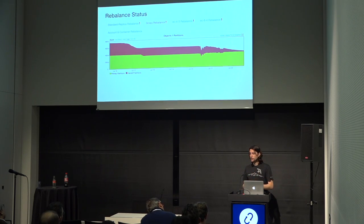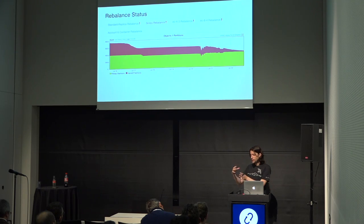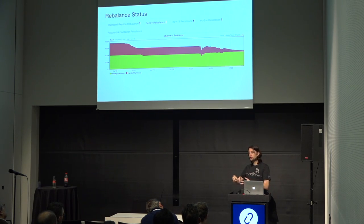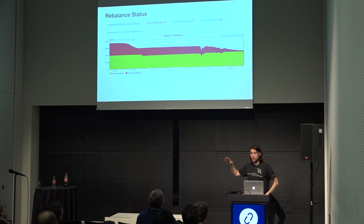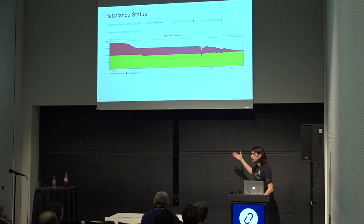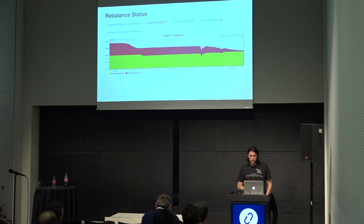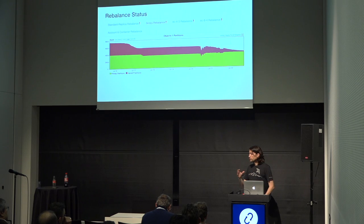When a partition is placed onto a non-primary location, we call that a handoff location. This graph maps a particular cluster showing how many partitions are in their primary locations versus how many are in handoff locations — you want the red to be gone. One of the first questions you should ask is: how did it get so bad in the first place? I have to be clear that having handoff partitions is a normal and expected part of running a Swift cluster — it's part of what it does for capacity expansion and failure handling. This doesn't mean anything's broken; there's no client impact. It just means operationally you need to resolve the problem.